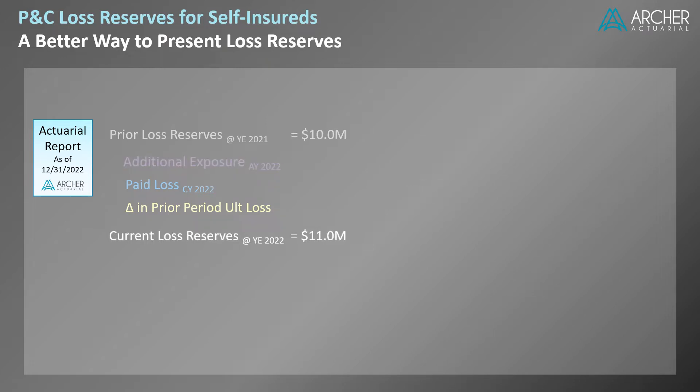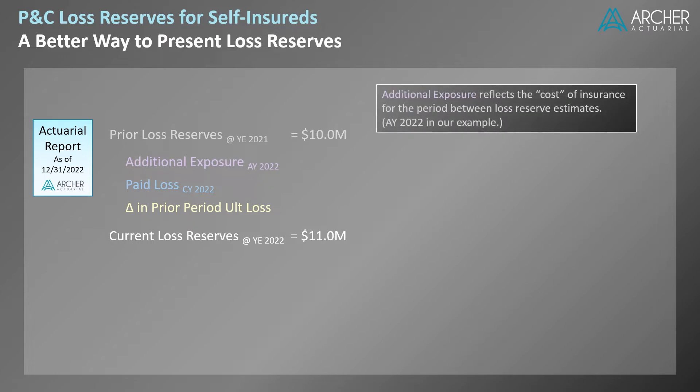The first item, additional exposure, reflects the cost of insurance for the period between loss reserve estimates, which in our example is accident year 2022. Note that in this context, we're discussing loss reserves, so the cost of insurance is limited to losses and loss expenses. In the reconciliation, additional exposure represents an increase to the prior loss reserve estimate.